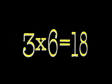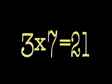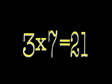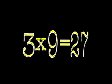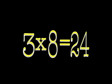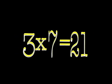Three times six is eighteen. Three times seven is twenty-one. Three times eight is twenty-four. Three times nine is twenty-seven. Three times nine is twenty-seven. Three times eight is twenty-four.